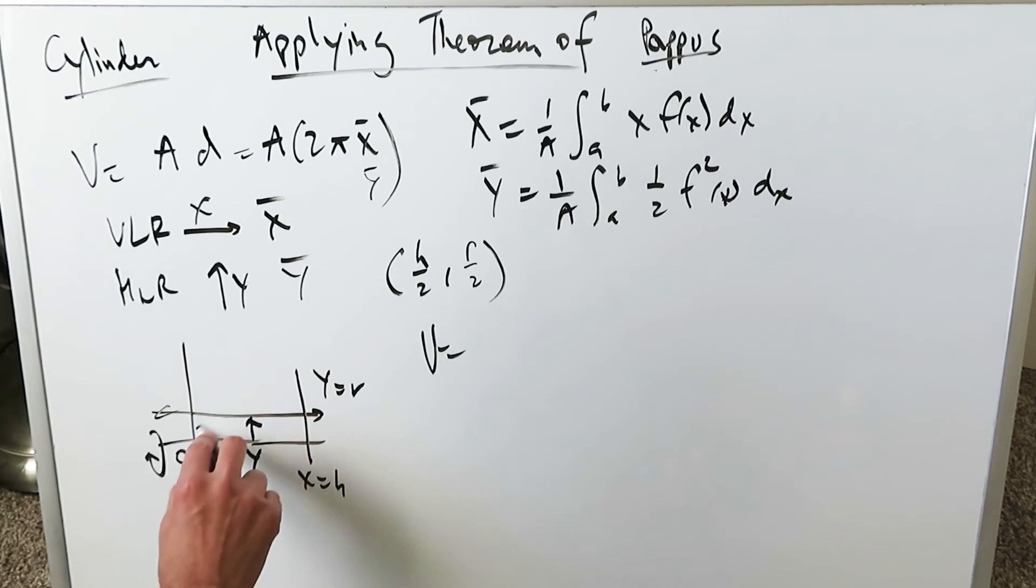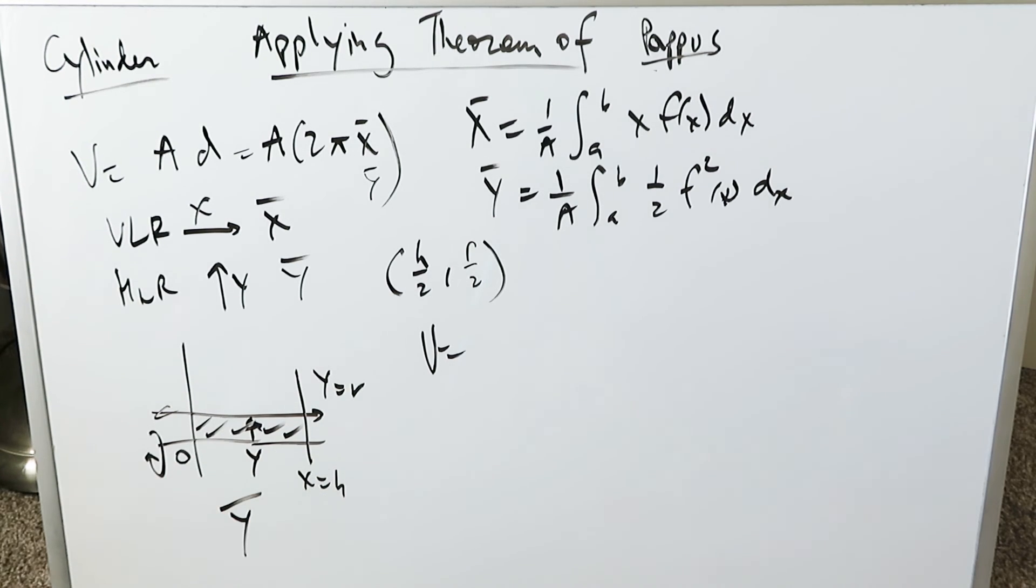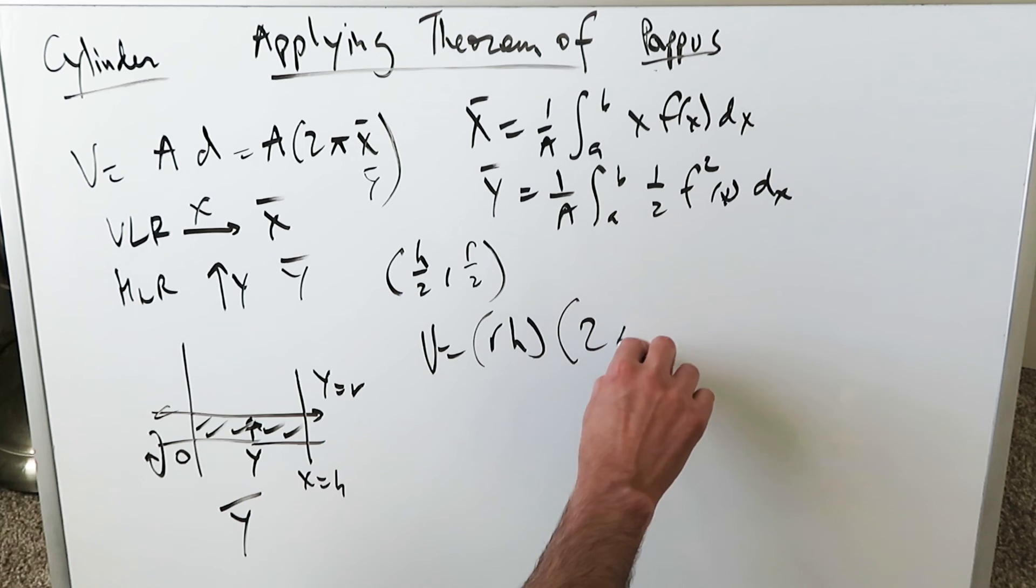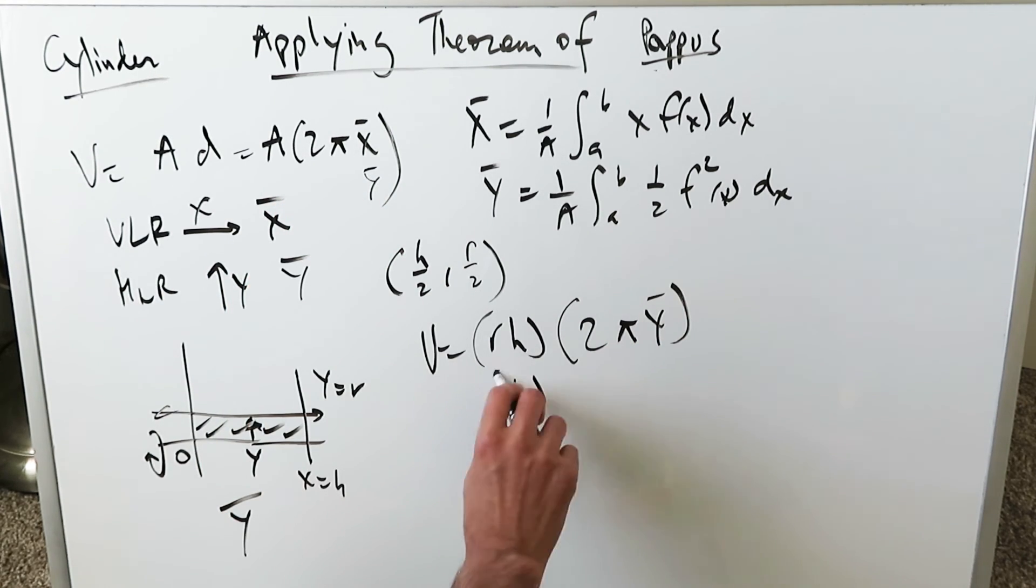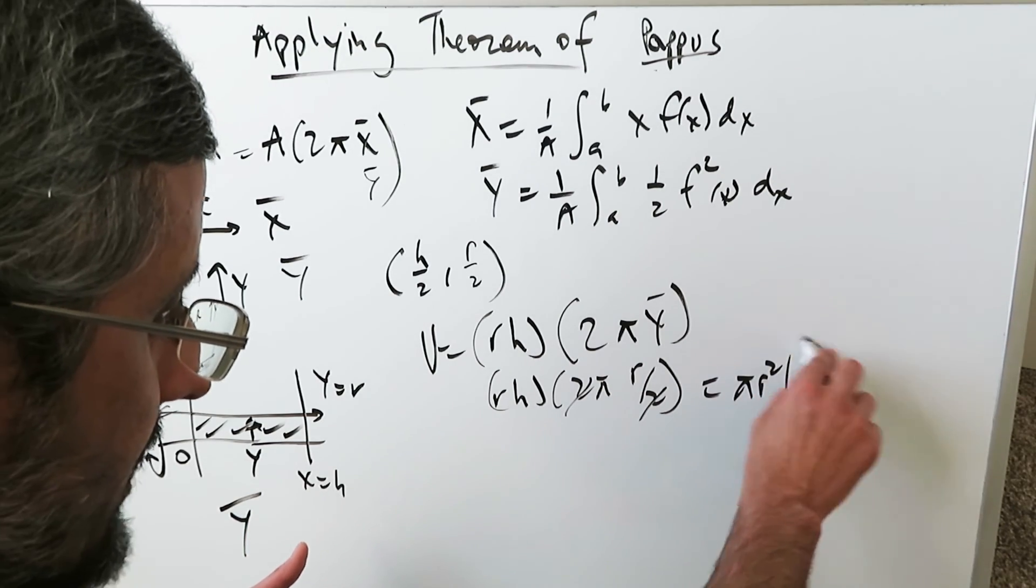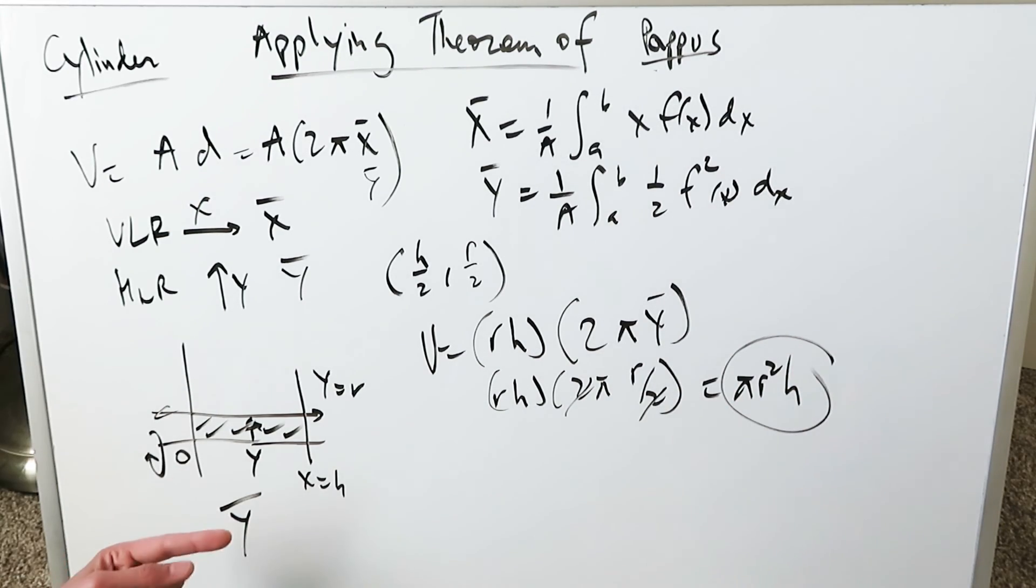Volume is equal to the area of this region which has a certain centroid and will now rotate around a single line of rotation. What's the area? Again it's a rectangle rh, length times width. Times 2π and now my y value. Let's plug away: rh times 2π, my y value here is r over 2. You cancel out, you have π r squared h. Either way you do horizontal or vertical line of rotation, you're still getting π r squared h which is right.